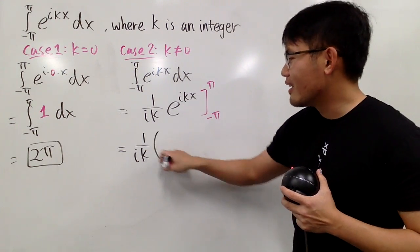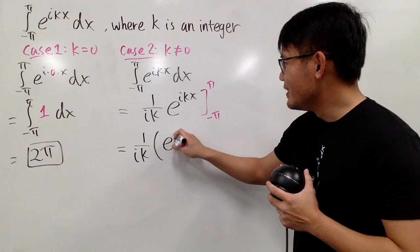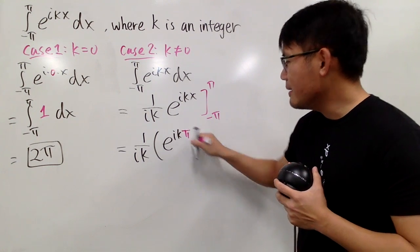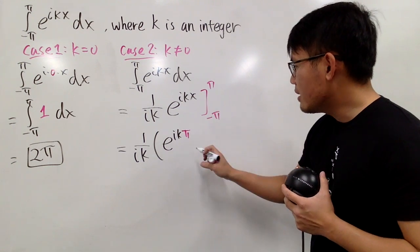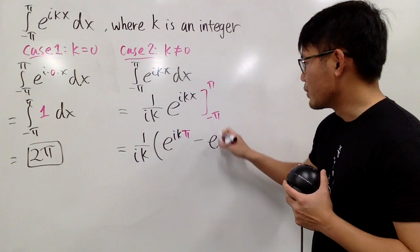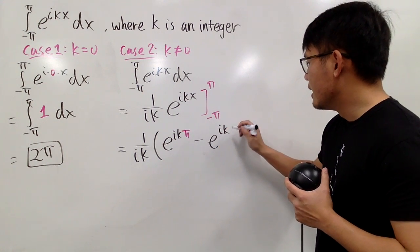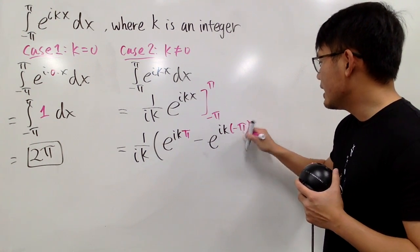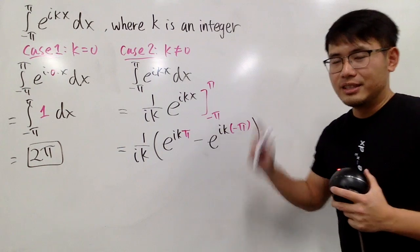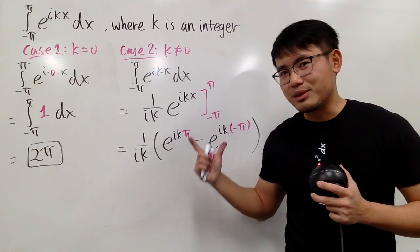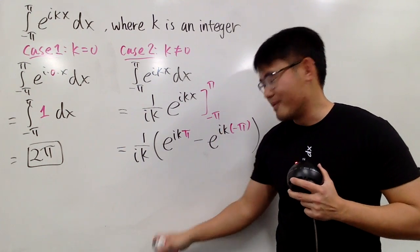Let me write it as 1 over ik still. And then I'll put in the pi right here. So we get e to the ik pi, and then put the negative pi here, and we are going to subtract. So we have e to the ik times negative pi, like this. This is good, but in fact we can actually simplify this more, way more.